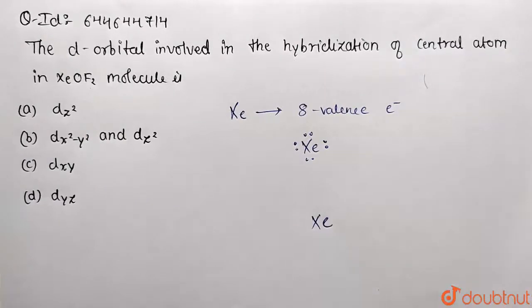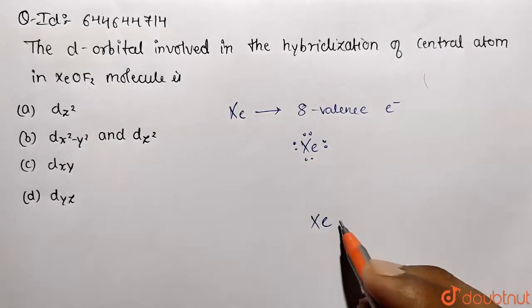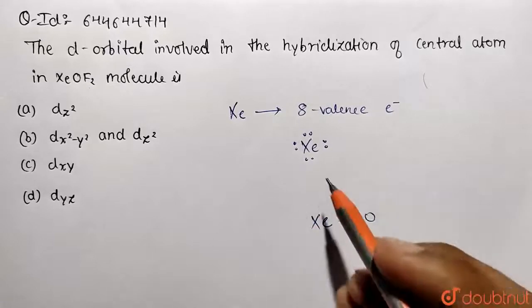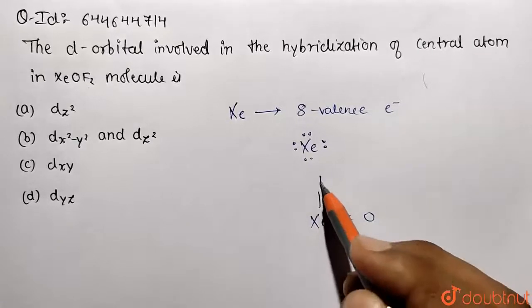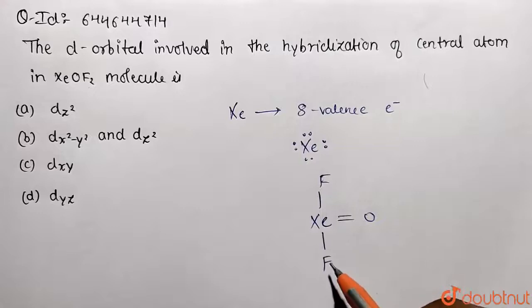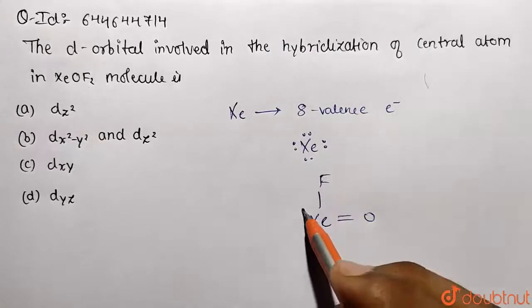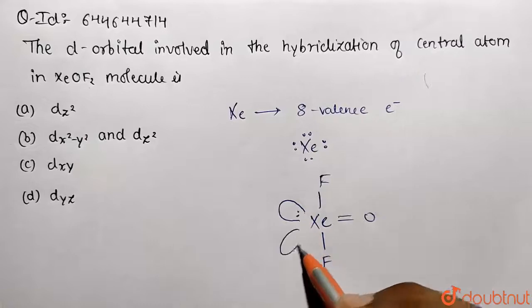So this is oxygen making a double bond over here. And now we are making two bonds of fluorine. So this is fluorine and this is fluorine. Now we are left with how many electrons? That is two lone pairs, so it will be represented like this.